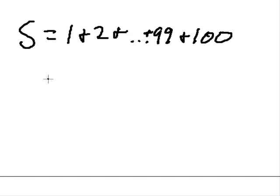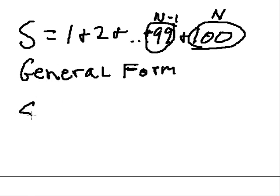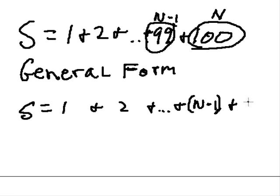Now we want to use a general form for this. How would we use a general form? This number that we're adding everything up to, we'd refer to that as n. And we'd use the number just before n as n minus 1. So we'll write down general form.